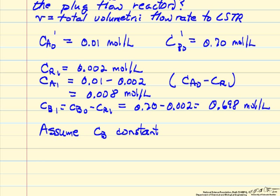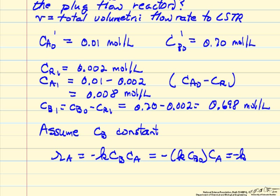And what that means is we're going to write the rate of A, which is a second order reaction. It's a concentration of B and a concentration of A. So we're going to write it like this as the initial concentration, and then we're going to call that K prime.